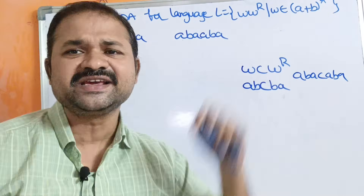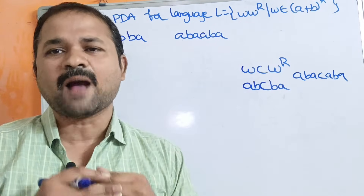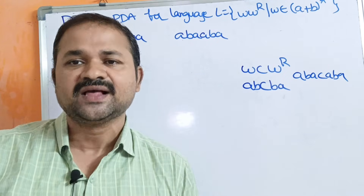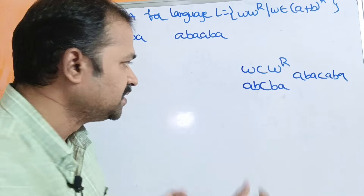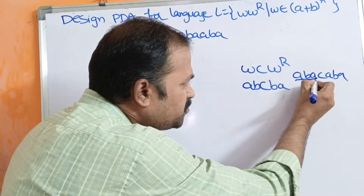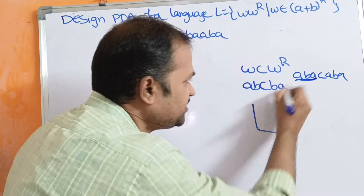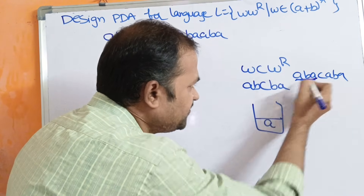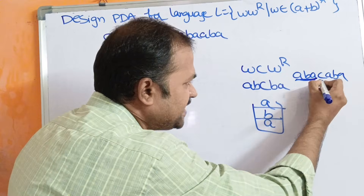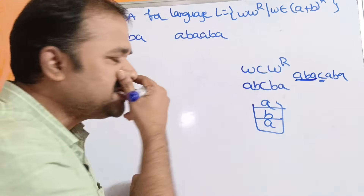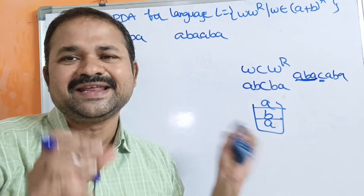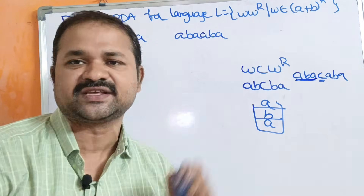The odd-length string case is very simple. We simply push all the symbols onto the stack until we get C. So before C, all characters are pushed onto the stack: first A is pushed, then B is pushed, then A is pushed. When we read C, it stands for a center marker, so there is no need to perform any operation on the stack.